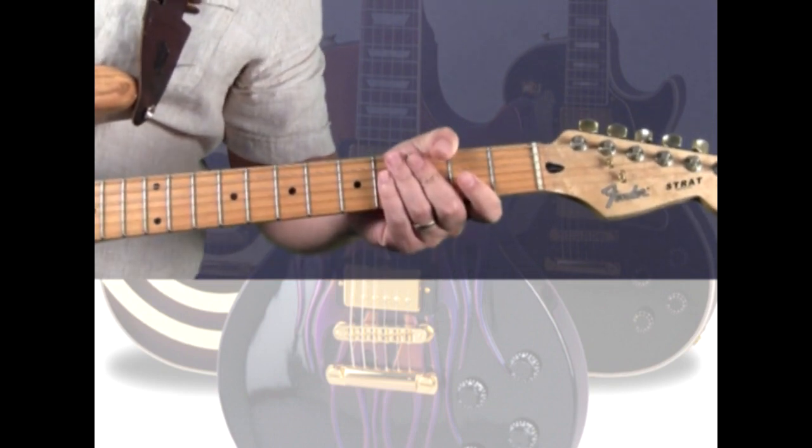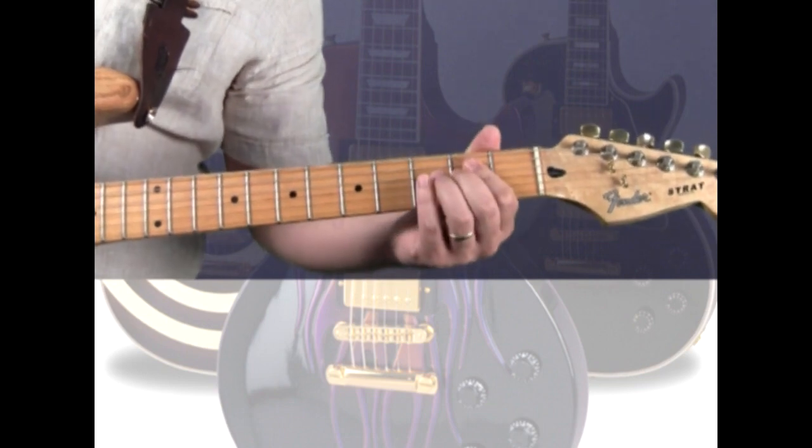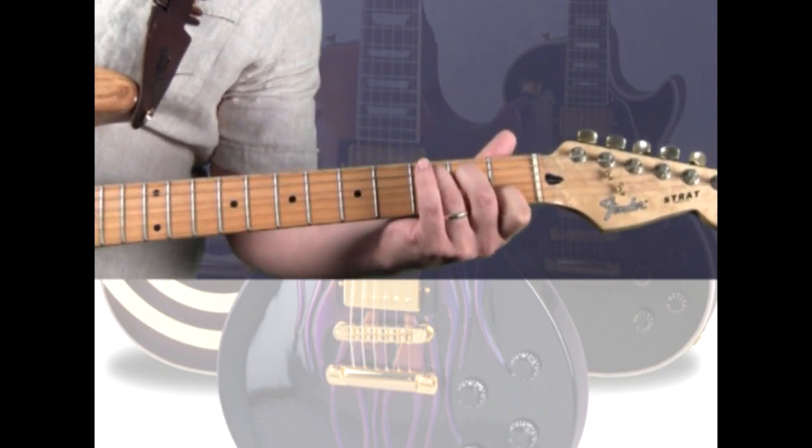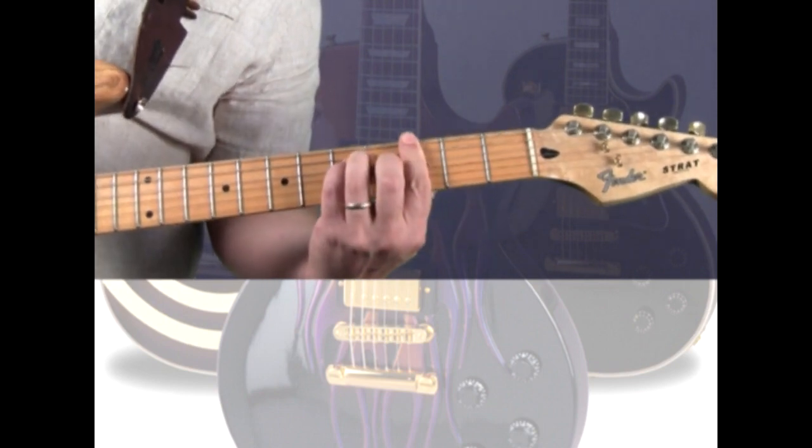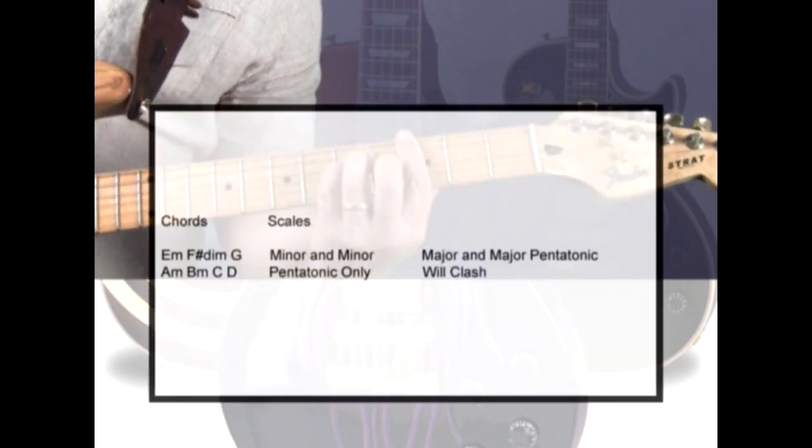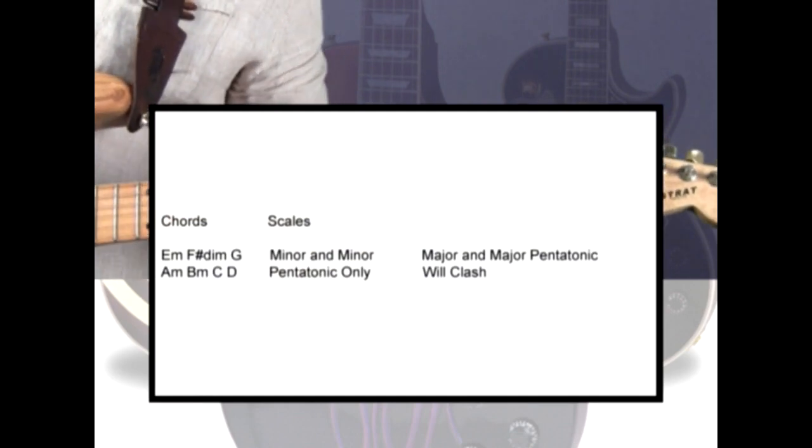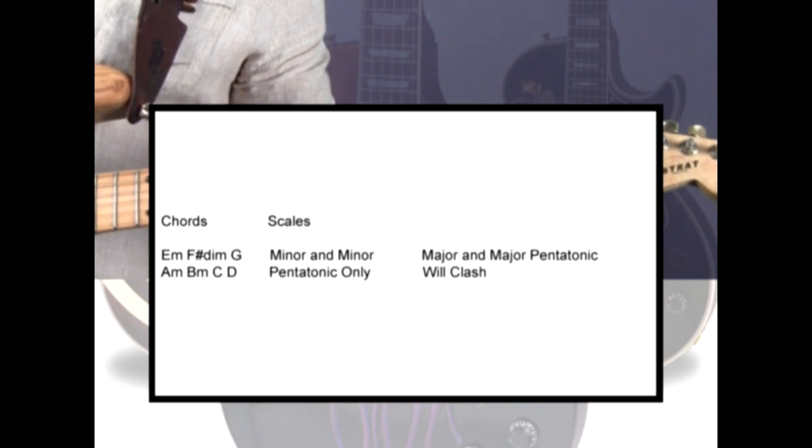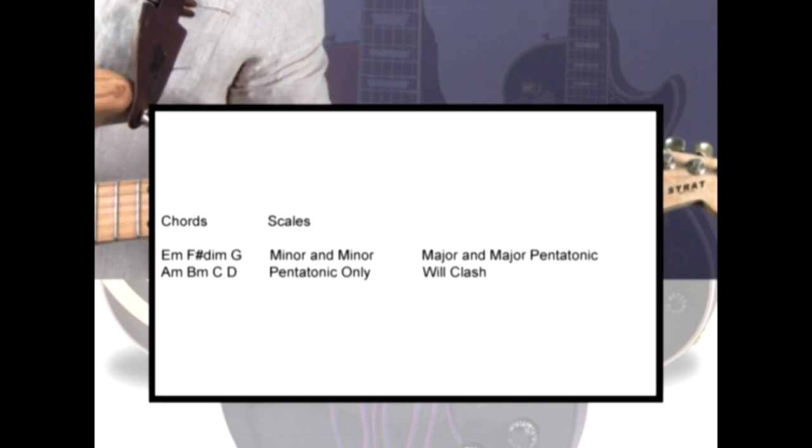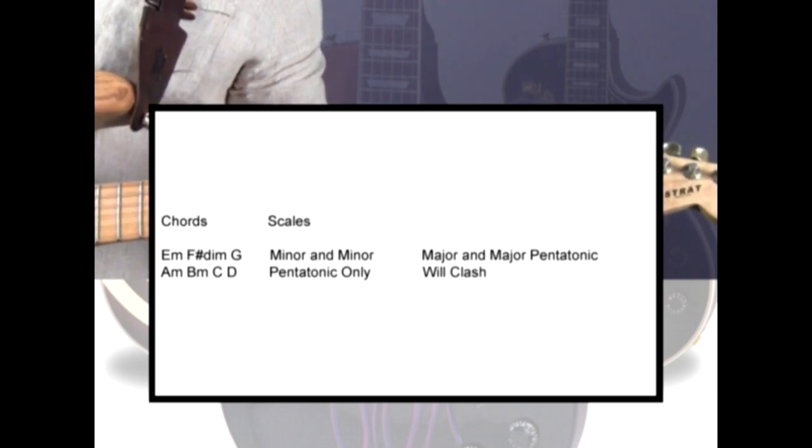Let's look at a four-chord progression. Here, we have an E minor, to C, to D, and to G. There's only one minor chord versus three major chords. Will the E minor scale fit? Well, all four chords come from the E minor scale. So, if we try to play the scale over it, you can see that it fits perfectly.